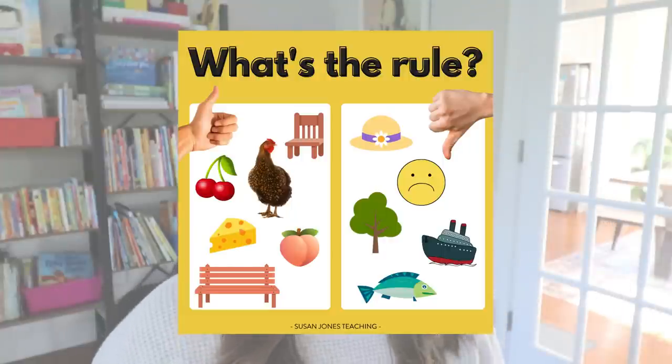On the thumbs down side we have hat, sad, tree, ship, and fish. The goal of this intro activity is to get students thinking about what sounds they hear on the yes side that they don't hear on the no side. Students will likely recognize they hear the CH sound in every word on the thumbs up side. Whether or not they know it's C-H yet, it's a fun way to put students in the driver's seat — instead of just saying 'this is what we're going to learn today,' they get to discover the skill.